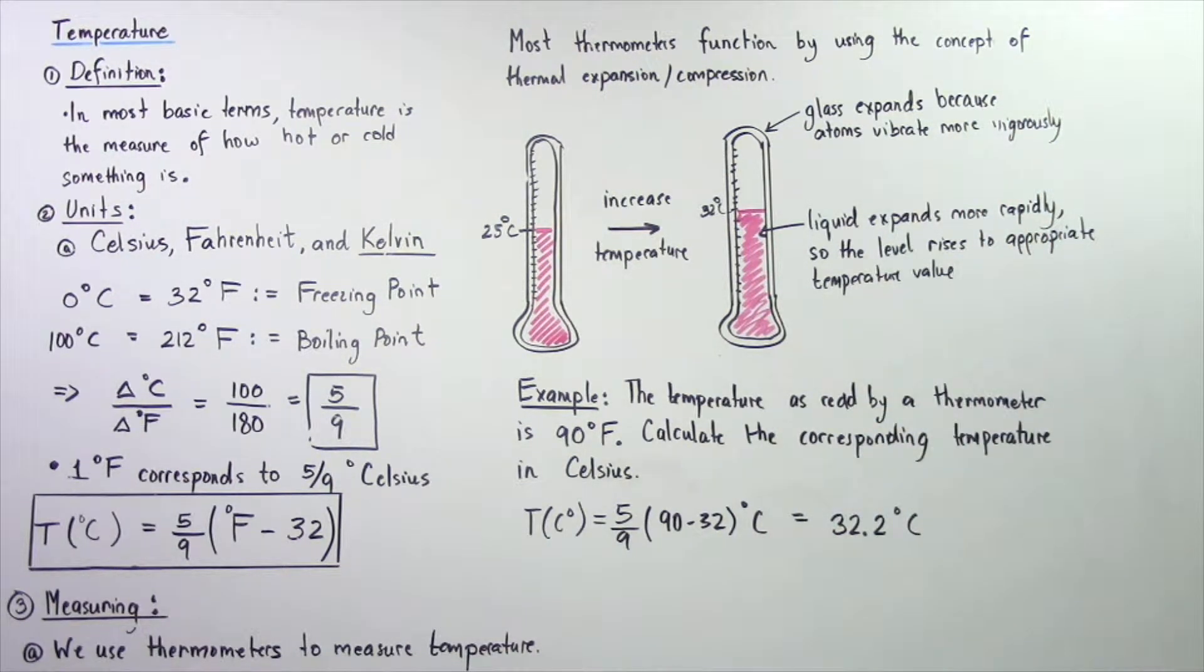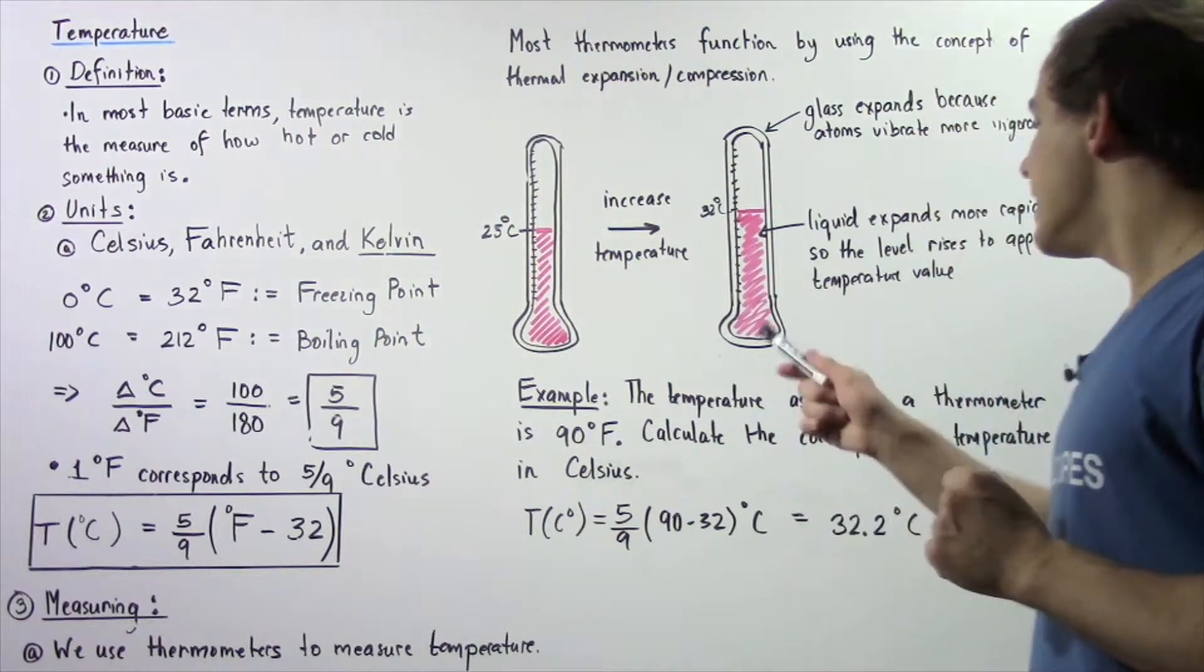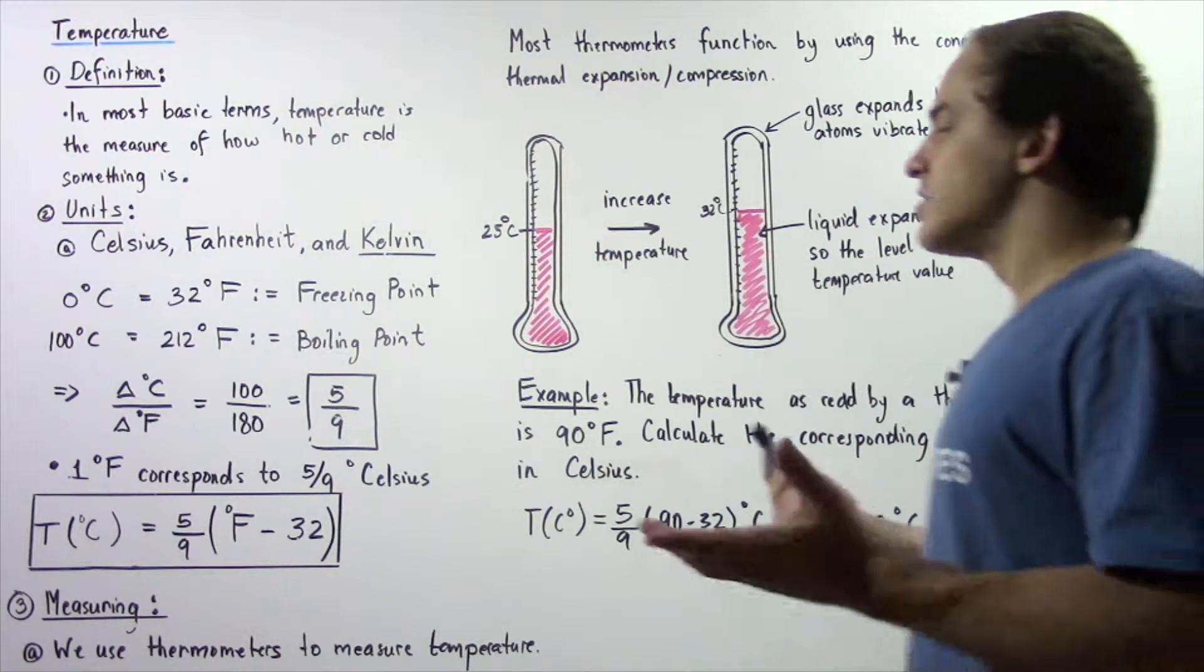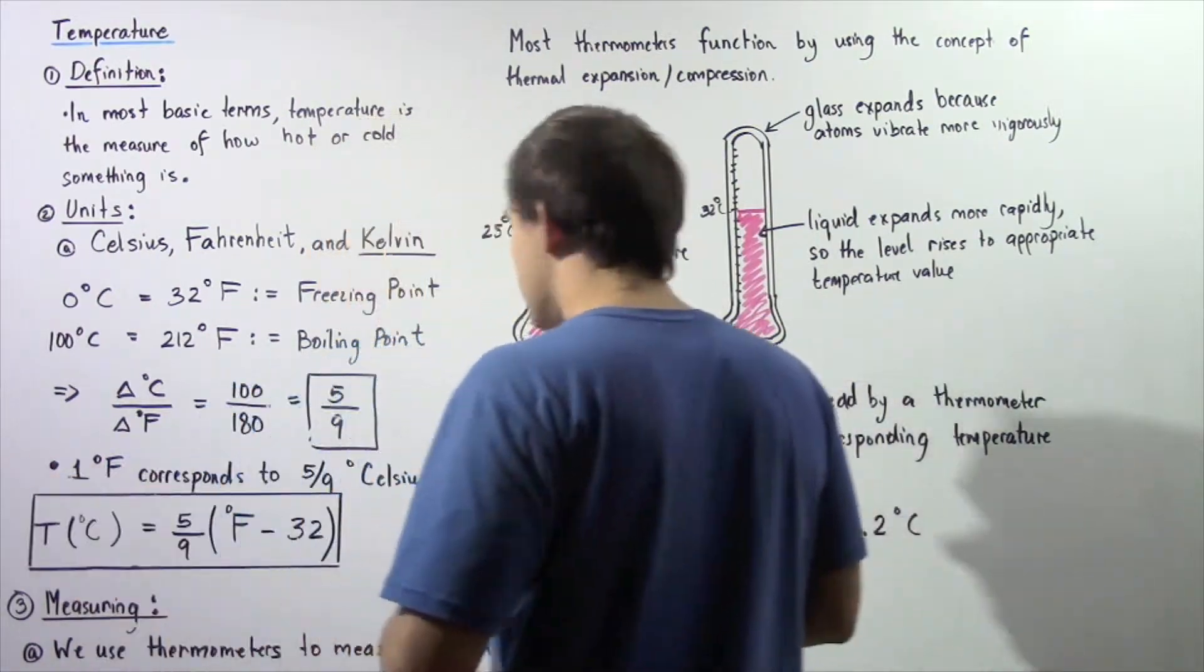So let's look at the following example. The temperature as read by a thermometer is 90 degrees Fahrenheit. Calculate the corresponding temperature in Celsius.